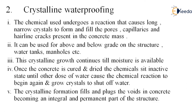The second type of waterproofing system is crystalline waterproofing. Here, you mix a powder and use it. Due to this, small crystals form which are fine enough to grow into the surface, filling up fine cracks and every pore, thus making it a water barrier. The chemical powder undergoes a reaction that causes long narrow crystals to form and fill the pores, capillaries, and hairline cracks present in the concrete matrix. It can be used for above and below grade structures, water tanks, manholes, etc.